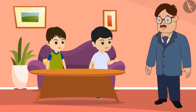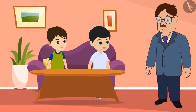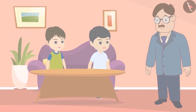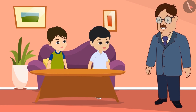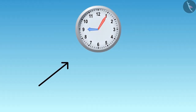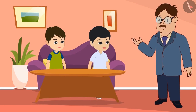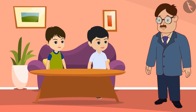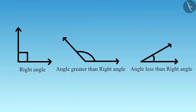But Uncle, just like we measure time in hours and minutes, can we measure angles in the same way? Yes, Golu, you can. Angles are measured in degrees. Just like knowing the minutes or hours by looking at the clock, we can tell how many degrees the two sides of an angle are making by looking at them. Tell me about the angles you know. Uncle, we know about three types of angles: right angle, angles greater than right angle, and angles less than right angle.